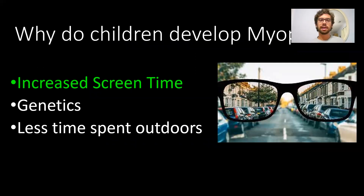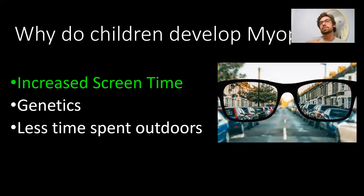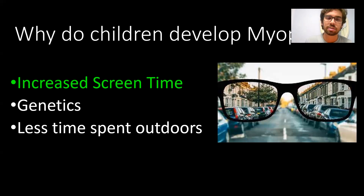So why do children develop myopia? The general consensus points to three main factors: increased screen time, genetics, and less time spent outdoors. My particular focus is going to be on increased screen time. With the pandemic and this era of reliance on technology, there hasn't been a greater time to focus on this issue. Children are younger and developing habits of being dependent on screens, and especially in education, it's going to run into issues with increased screen time.